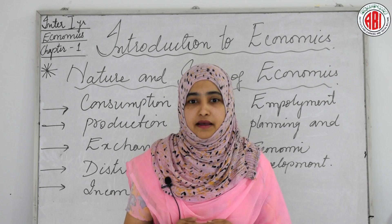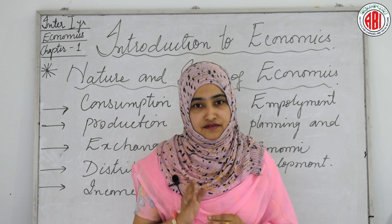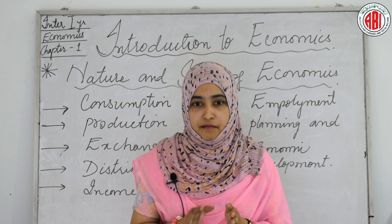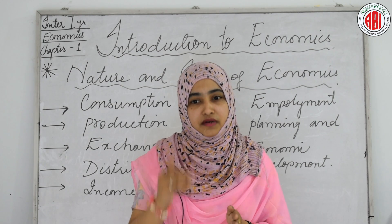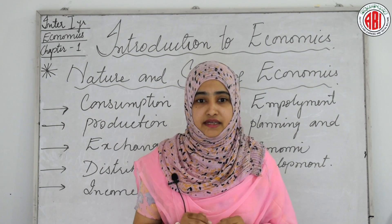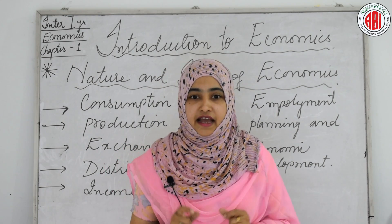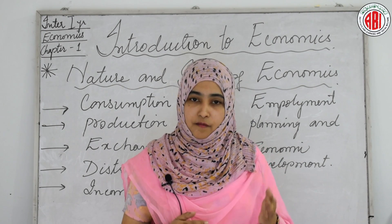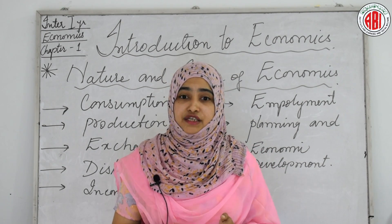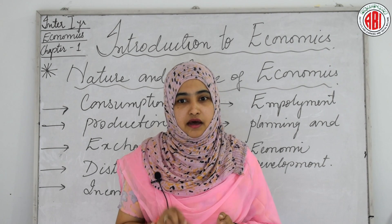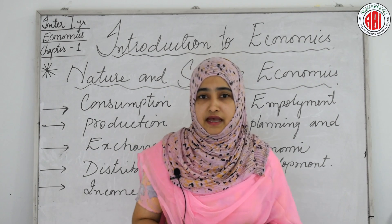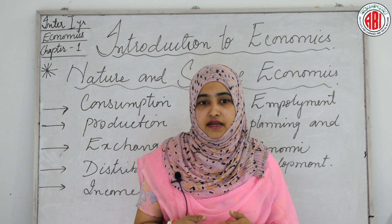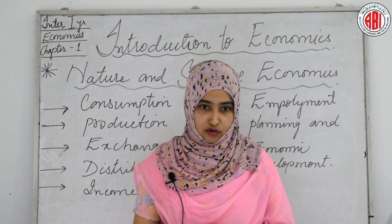In economics, production is the process of conversion of raw materials into final goods by adding form, place, and time utility to those raw materials. John writes that production is any activity directed to the satisfaction of other people's wants through exchange. The factors which participate in production are called factors of production — for example, land, labor, capital, and organization.